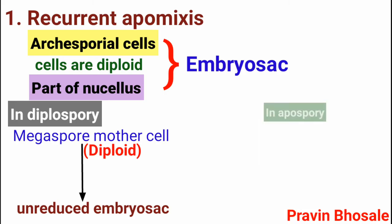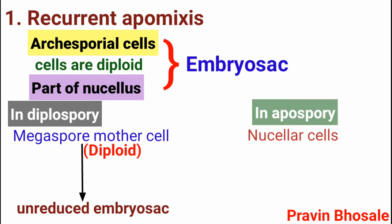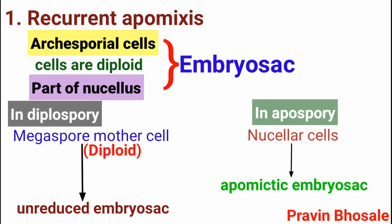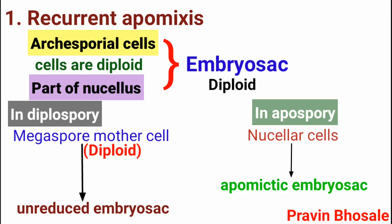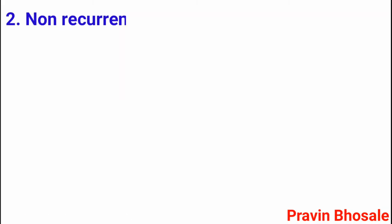In apospory, the nucellus cells give rise to an apomyctic embryo sac, so the embryo sac formed is diploid. This falls under recurrent apomixis.